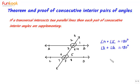Let's see what we have for proving this. We have parallel lines, we have the corresponding angle axiom, we have linear pairs, and we have vertically opposite angles. Since linear pairs are supplementary, let's start with linear pairs as our first step.